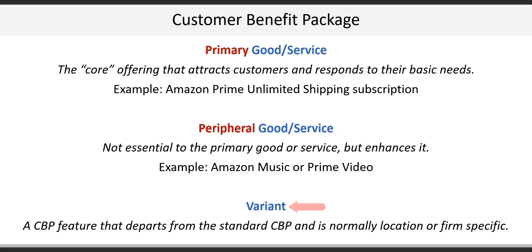A Variant is a CBP feature that departs from the Standard Benefit Package and is normally location or firm specific.